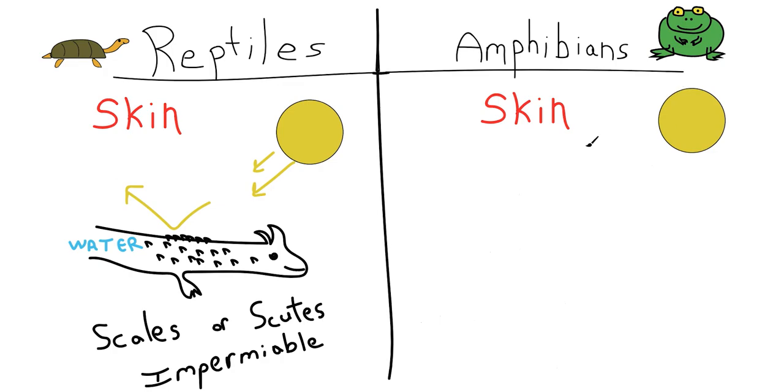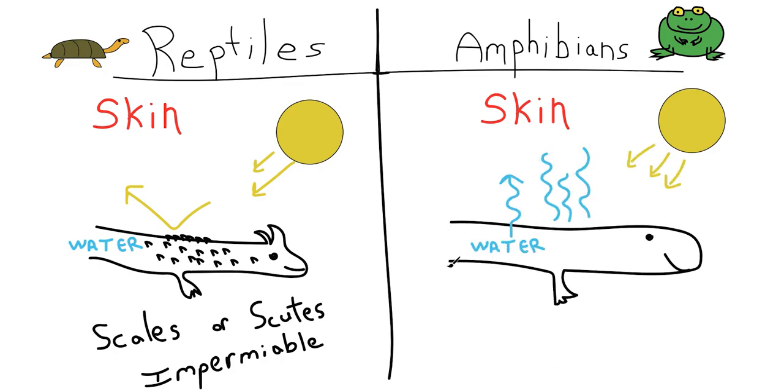Amphibian skin is permeable, which allows water to pass through. They are at risk of dehydrating if exposed to excessive sunlight. Keep in mind, some species such as certain toads have special adaptations to traverse dry land.